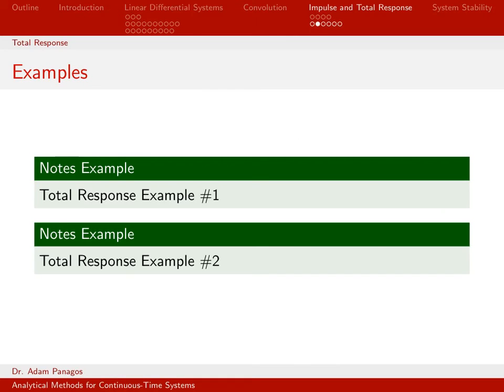So that's what we're going to do in these subsequent examples. We're going to start with a system described by a differential equation. It'll have both initial conditions and an input, and then we are going to solve for the total response. We're going to work through two examples.